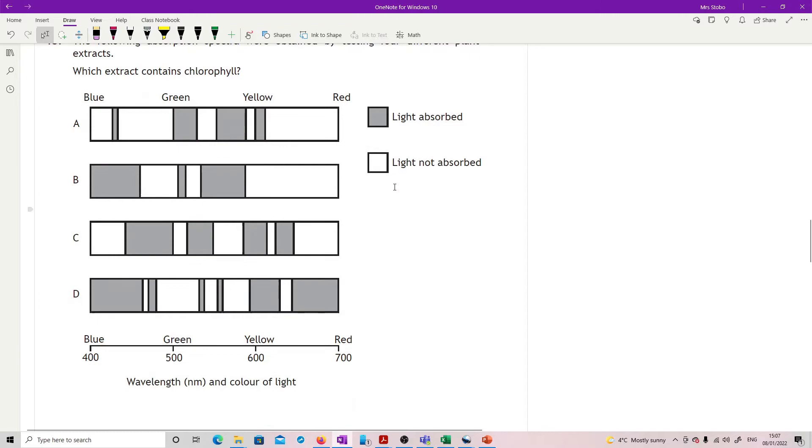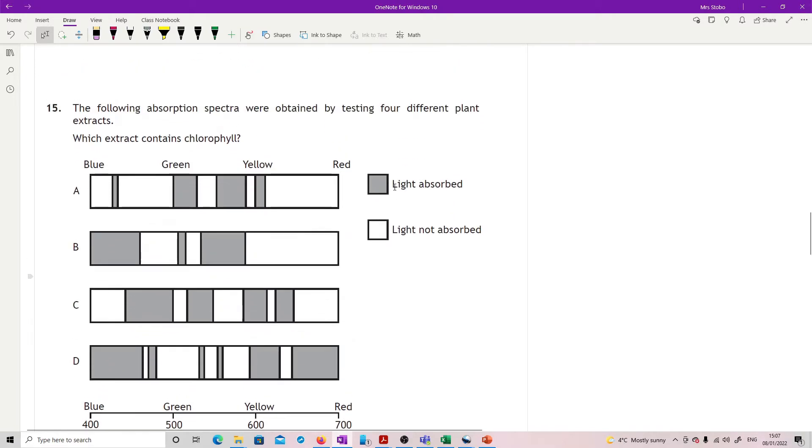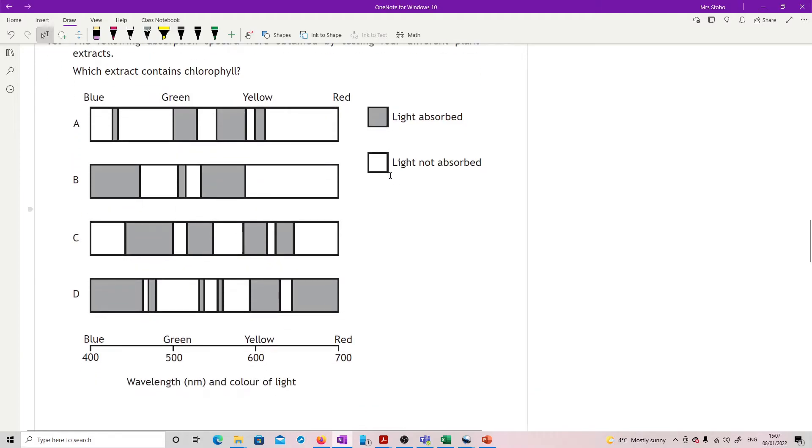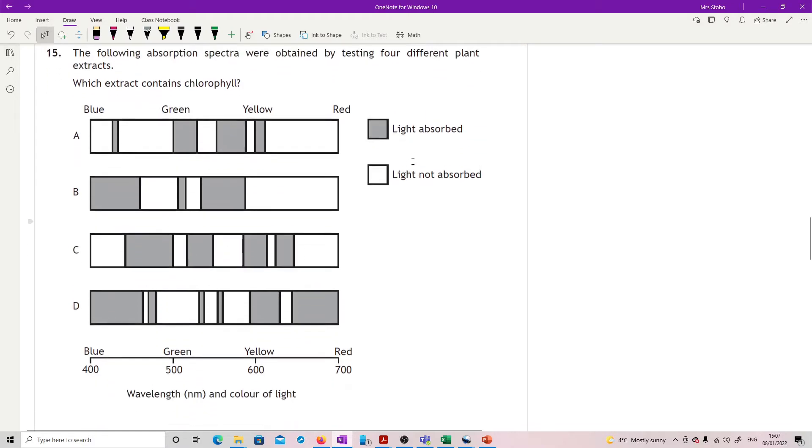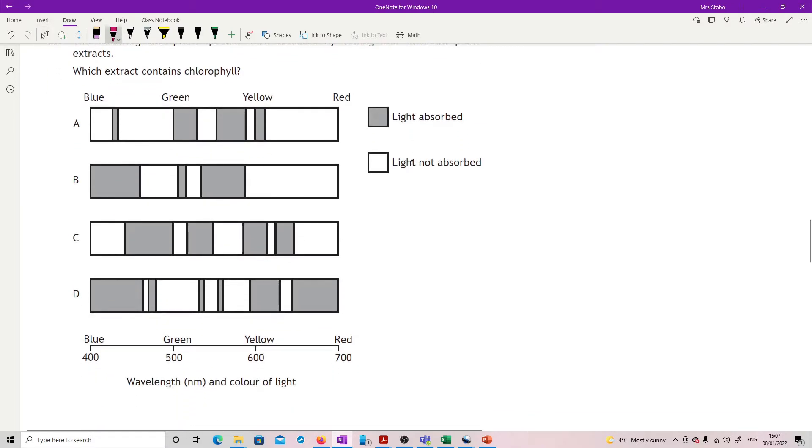Question 15: The following absorption spectra was obtained by testing four different plant extracts. Which extract contains chlorophyll? You need to know that its absorption spectrum is high at one end and high at the other. We're looking at high absorption in the red and the blue, but not so much in the green in the middle. So I'm looking for something with high absorption at both ends, and the only one that fits that is D. You're not expected to know this pattern this well, just this red-blue pattern.